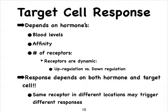How a target cell responds to the binding of a hormone to receptors on the target cell depends on a variety of things. Clearly, how much hormone is present in the blood, the lymph, or the bodily fluid. Also, how good is the fit between the hormone and the receptor? And then, how many receptors are present on the target cell? Receptors can actually increase or decrease in number, and we will talk about the upregulation and downregulation of receptors.